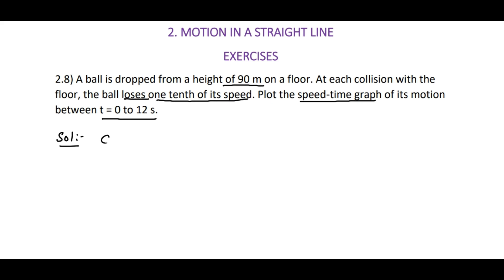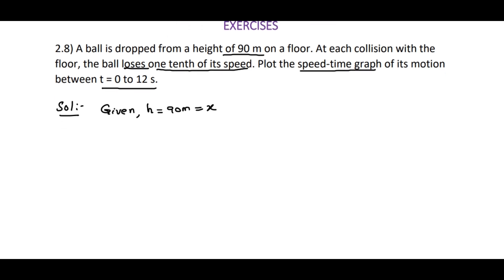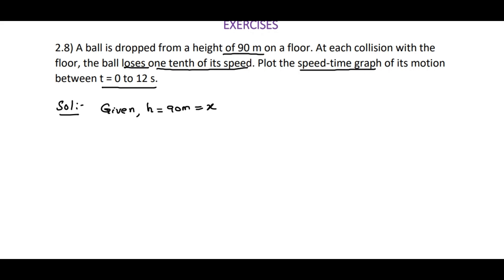Here, the height given is 90 meters. We can also take this as displacement or position x. The situation: this is the floor, the ball is dropped like this. Its initial speed is 0. It is dropped from height 90 meters. It reaches point A and will acquire some velocity while reaching the ground.